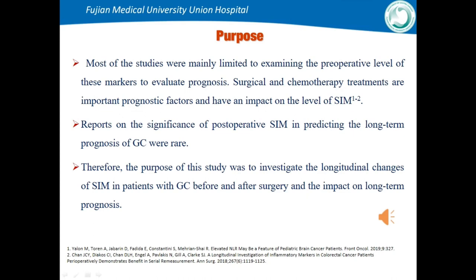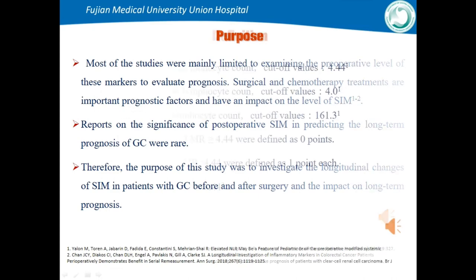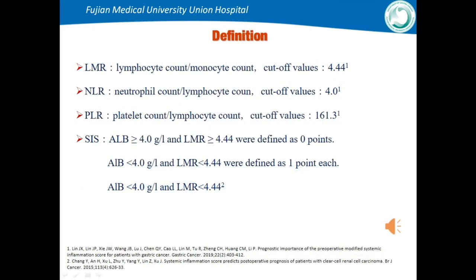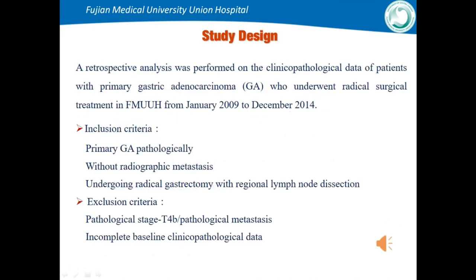Surgical and chemotherapy treatments are important prognostic factors and impact the level of systematic inflammatory markers. Reports on postoperative SIM in predicting long-term prognosis of gastric cancer were rare. Therefore, the purpose of this study was to investigate the longitudinal changes of SIM in patients with gastric cancer before and after surgery and the impact on long-term prognosis. The definition and cutoff values of LMR, NLR, PLR, and SIS were taken from previous literature. Hematological specimens were measured at 1-6 months and 12 months postoperatively. Finally, 2,180 cases were included.